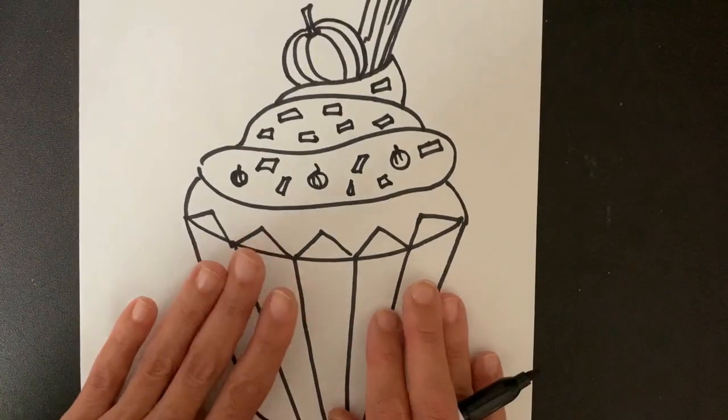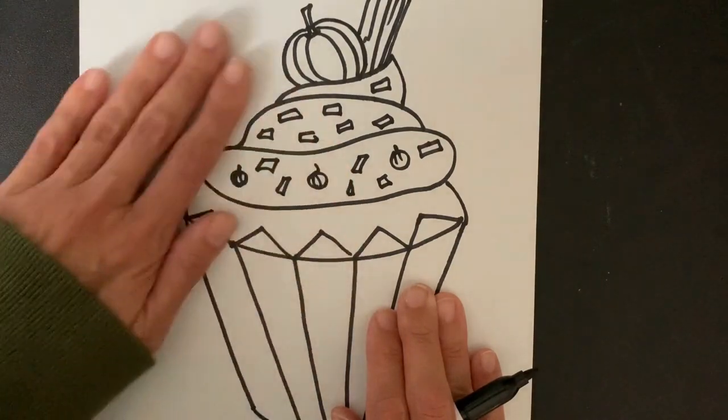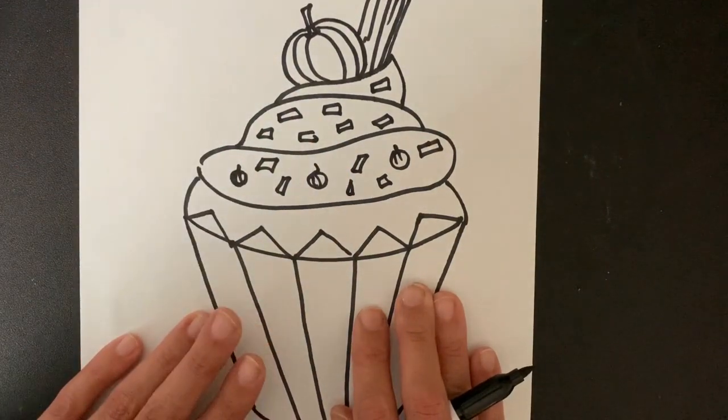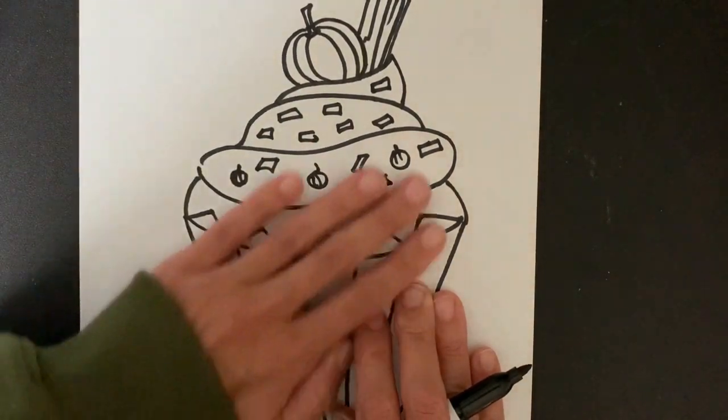Now once you're done and you've drawn it with pencil, I recommend outlining with a black crayon or black marker before adding color.